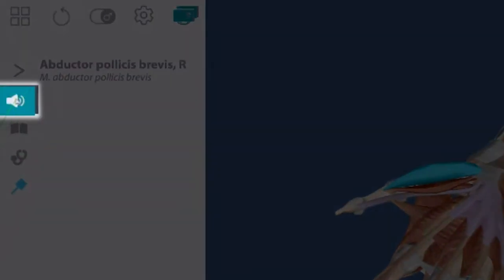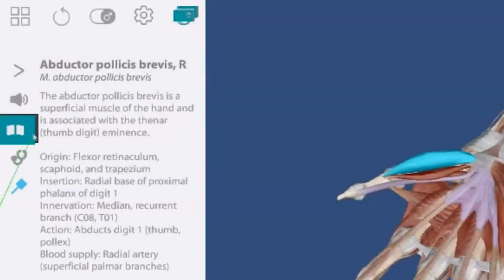By selecting the abductor pollicis brevis, I can have it read to me by selecting the speaker icon to get the exact pronunciation of that word. I can then click on the book icon which will give me the full definition of the abductor pollicis brevis or any other area that I have selected.